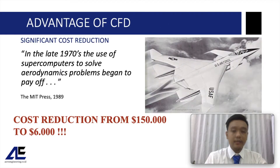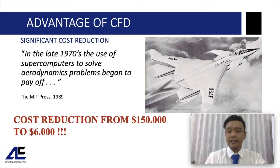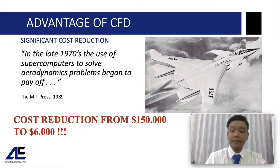In the 1970s, NASA conducted a high-maneuverability aircraft technology project and predicted an excessive drag force near the speed of sound. The redesign cost for wind tunnel testing was almost $150,000 and would have delayed the project. Instead, the project was redesigned using a supercomputer — what we now call CFD — and cost only $6,000. With much more powerful and affordable computers today, we can save much more.